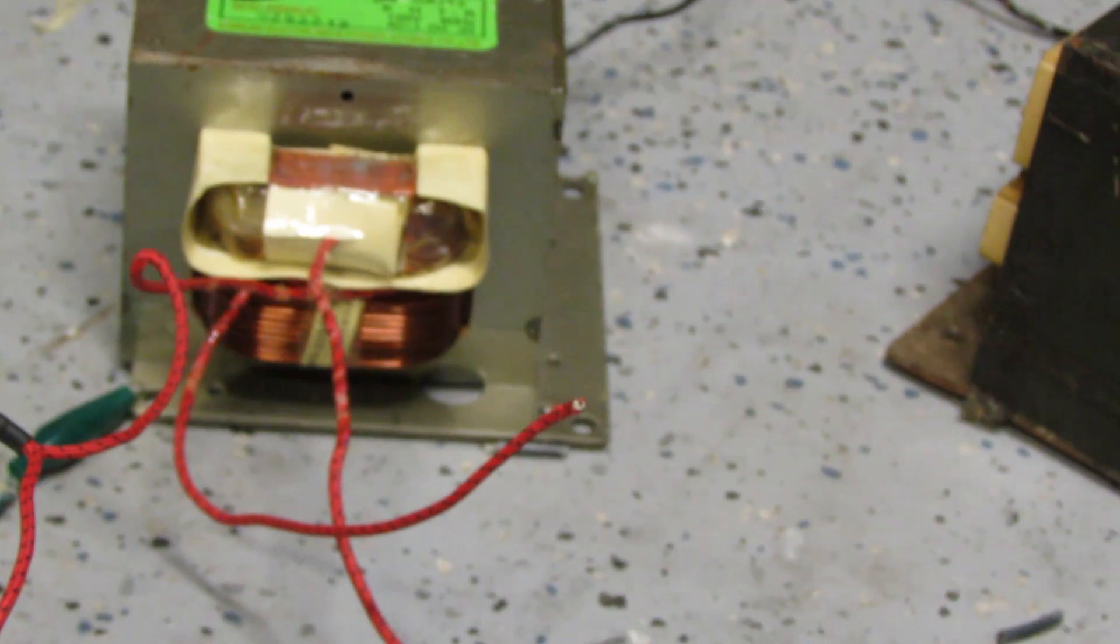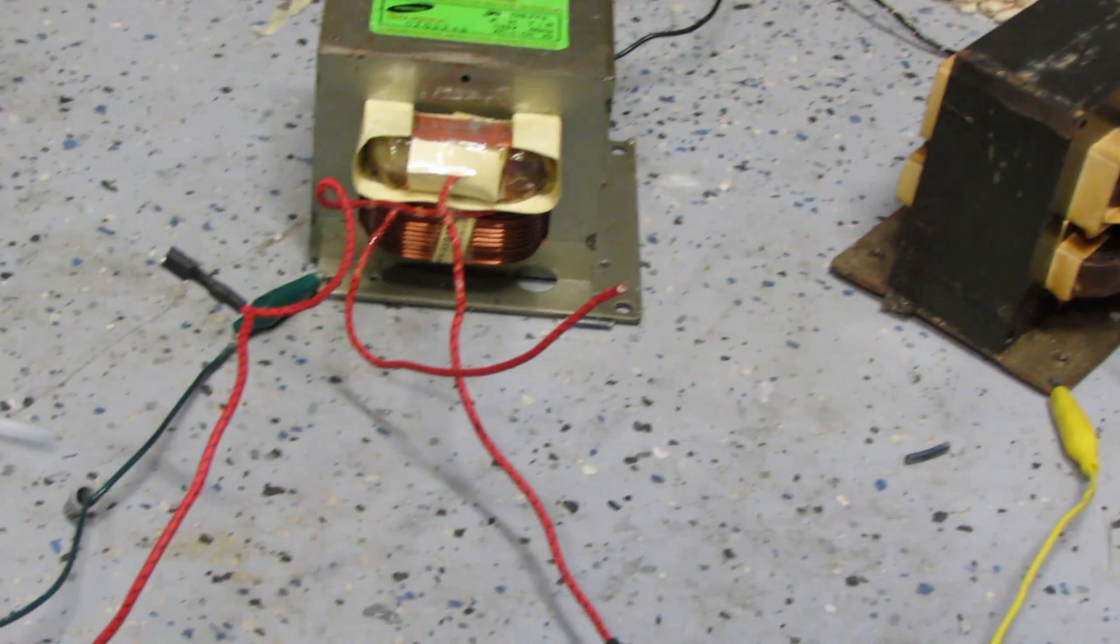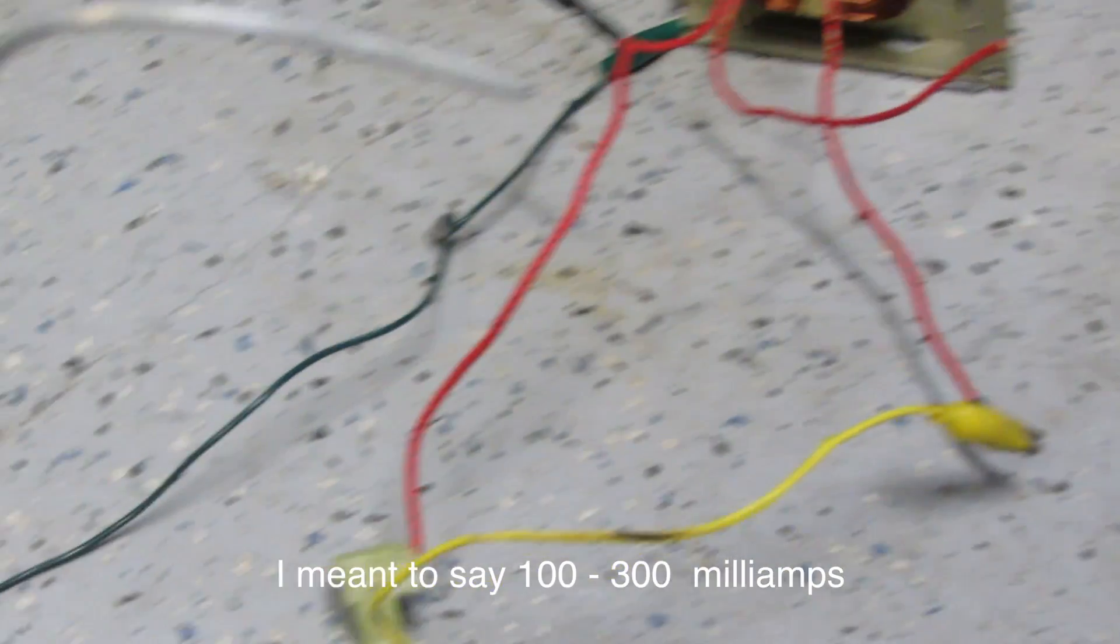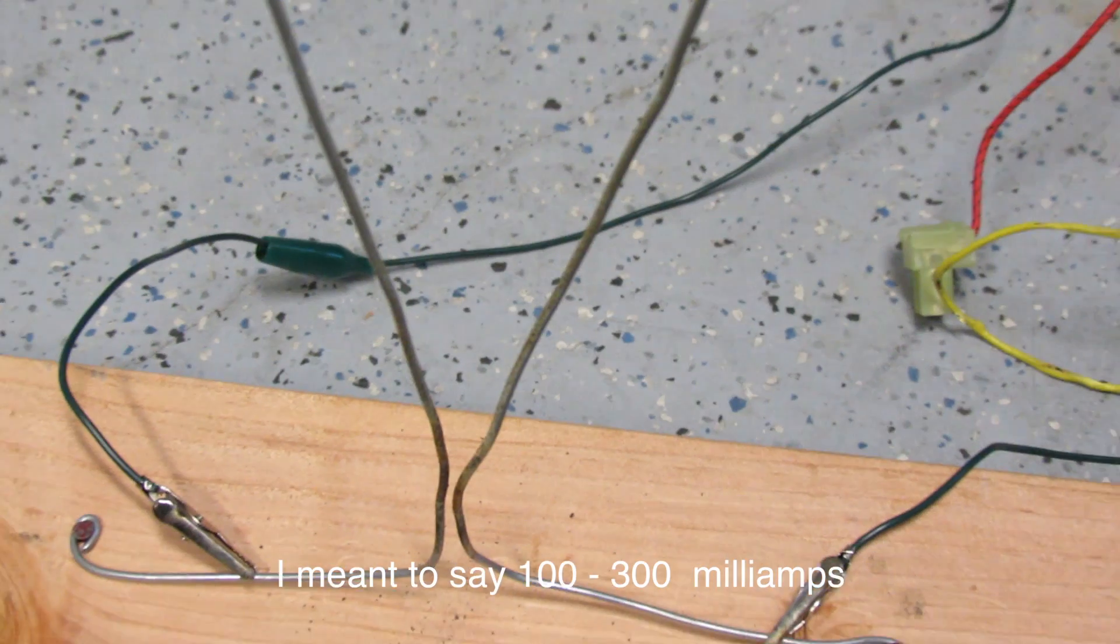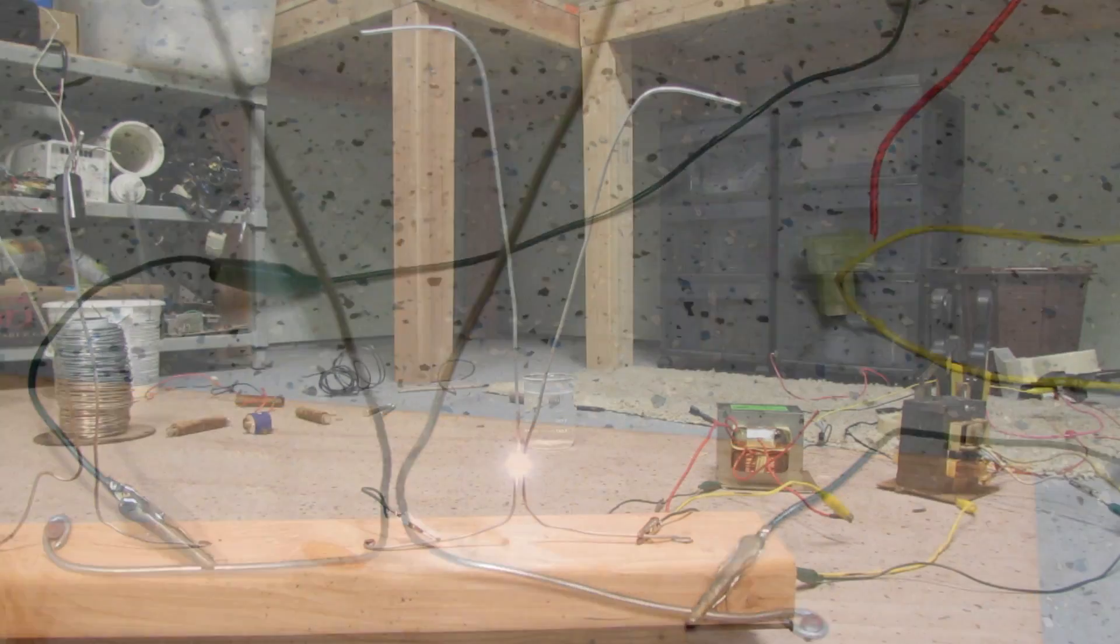Which makes this 4,000 volts and I'm not sure on the amperage. I'm guessing it's in the 100 to 300 range just by looking at the way the arc looks. So I'll get this fired up and you guys can see what it looks like.